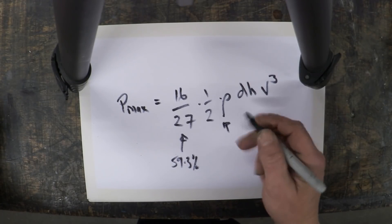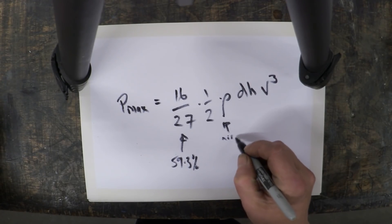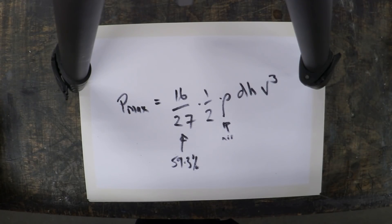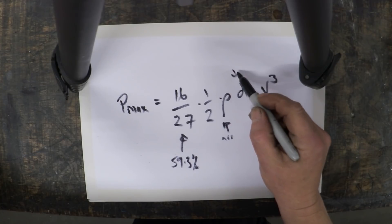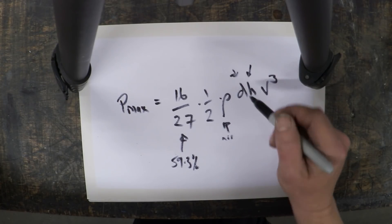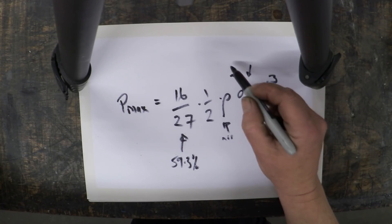Now this rho, this is the air density. That air density is important because if you think about it, it's the mass of push against the rotor blades. If we have more mass, more push, then it's going to have an effect so the air density is really important. This d and h, these are the diameter of the rotor and the height of the rotor in meters.